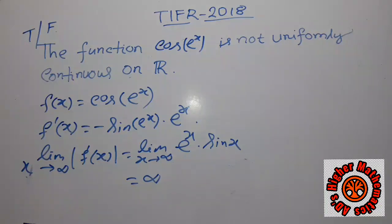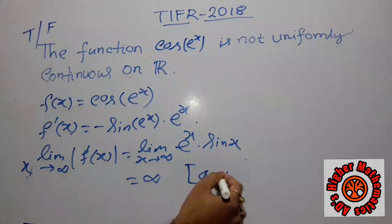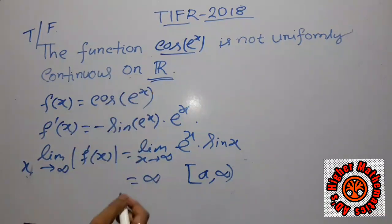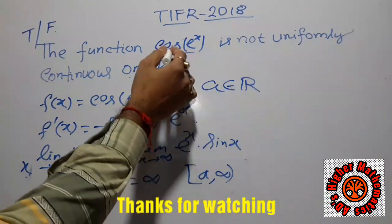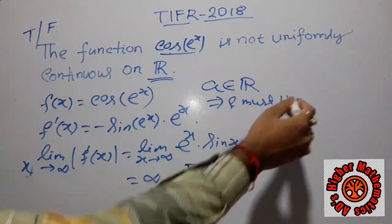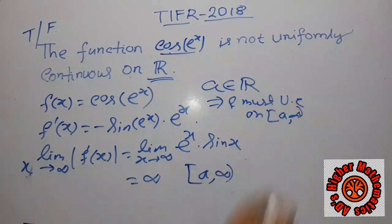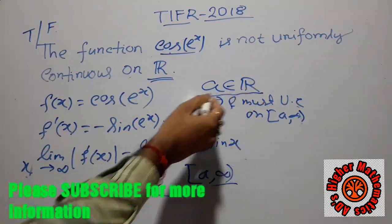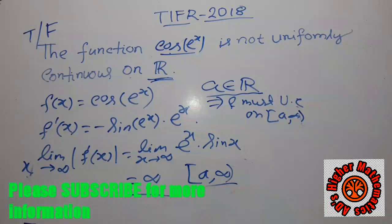By the previous lemma we can easily show that the function is not uniformly continuous on any domain [a, ∞). Now, if the function were uniformly continuous on ℝ, it must be uniformly continuous on [a, ∞) for any real number a. But we have shown by the lemma that it is not uniformly continuous on such intervals. Therefore the function is not uniformly continuous on all of ℝ, and the given statement is true.